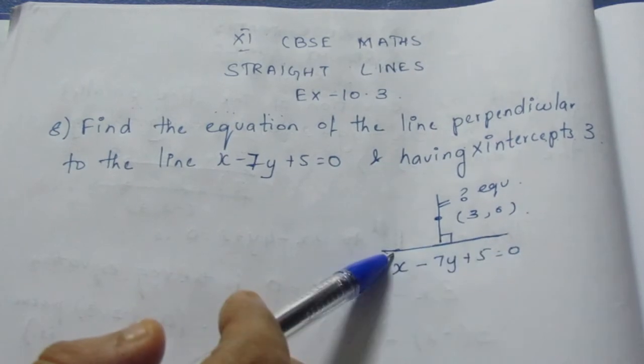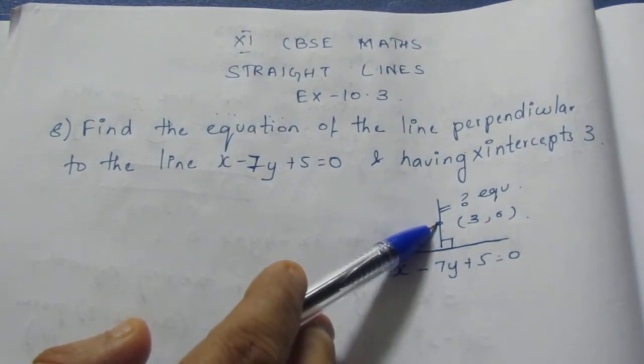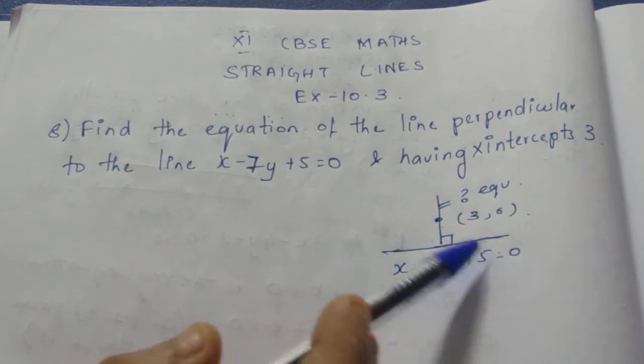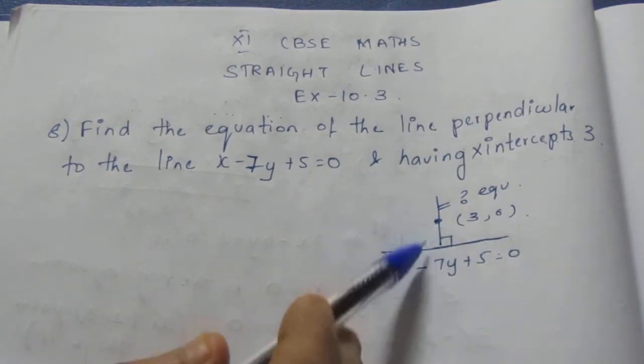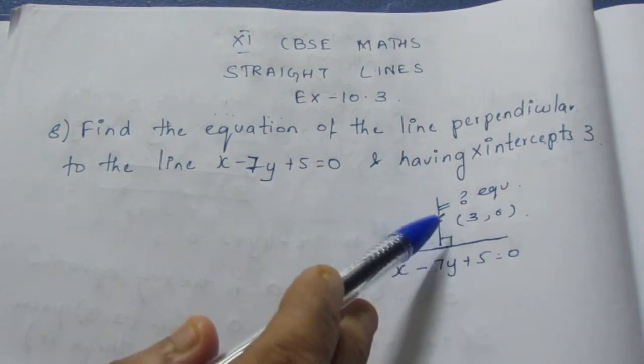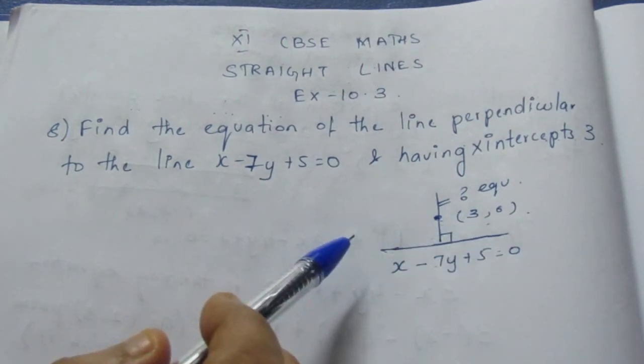Now we need to find the equation of this line. The given hint is it is perpendicular to the line. So in two ways we can write the equation: by taking the slope m1 and finding m2, or with a slope and a point we can find the equation.